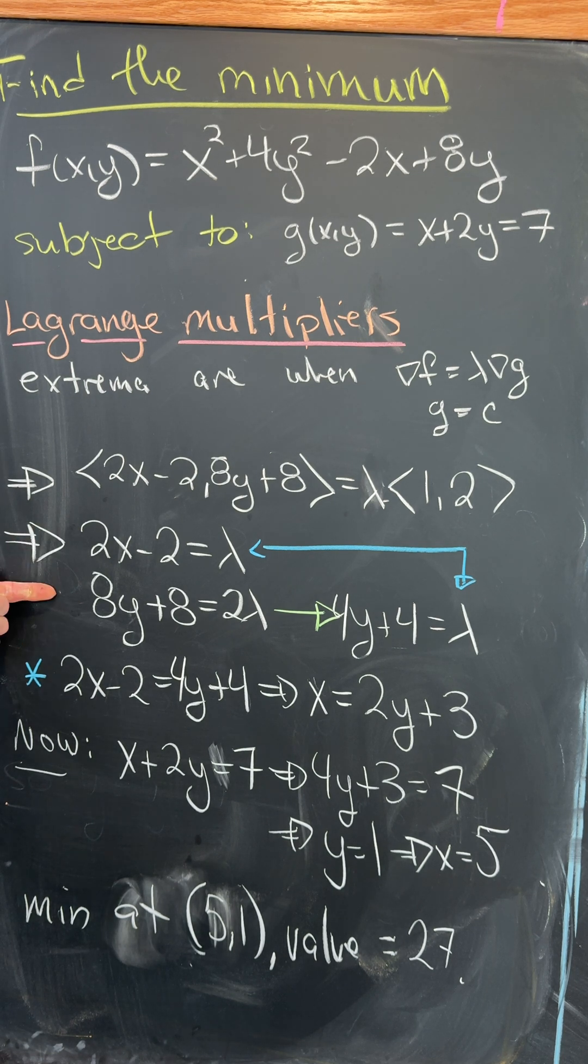Now we can divide the second one by 2 to get 4y + 4 = lambda, and then equate these two equations giving us 2x - 2 = 4y + 4.